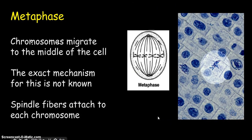Then we transition to the next phase called metaphase. Meta means middle, so the chromosomes will migrate to the middle of the cell — it's really important that they do this. The exact mechanism for this is actually not known; biologists don't know how this occurs. But the spindle fibers continue to grow and attach to the chromosomes, so maybe that has something to do with how they get to the middle. There are your centrioles, here are the fibers, and the chromosomes are all lined up. You can see highlighted in this field of cells under the microscope — this one is actually in metaphase. The reality is it looks a little messier than in the cartoon version.